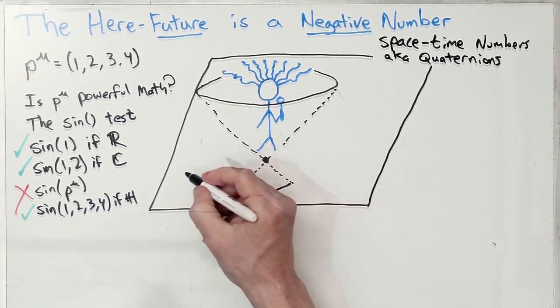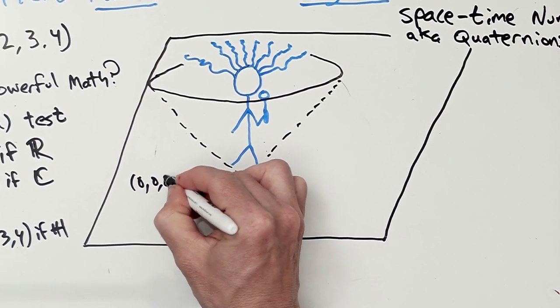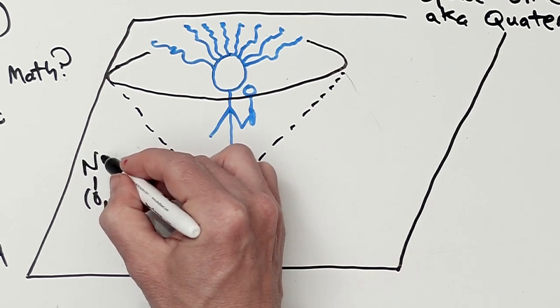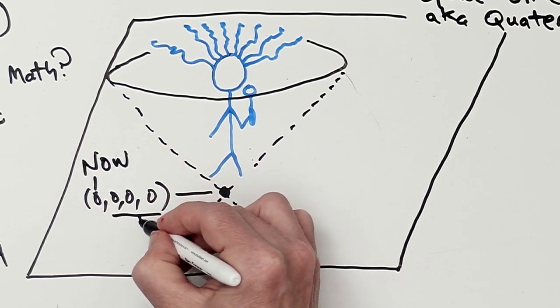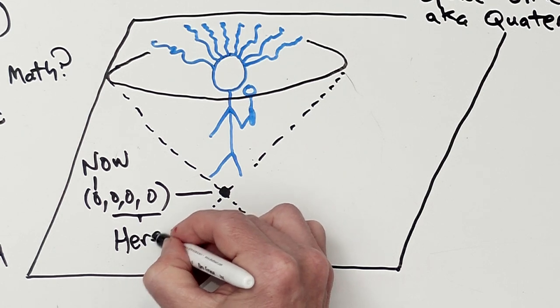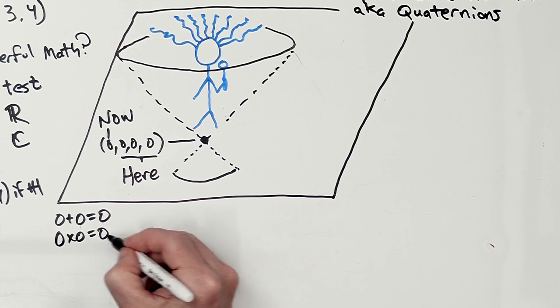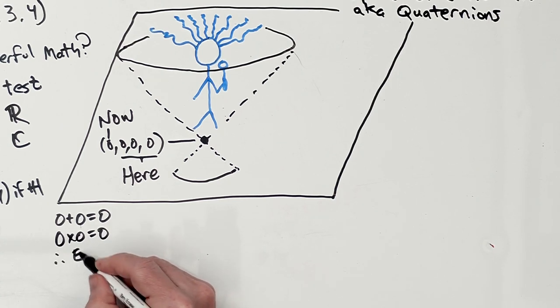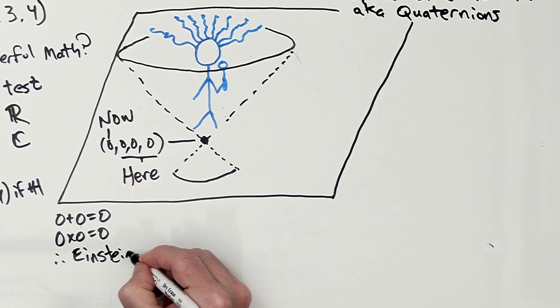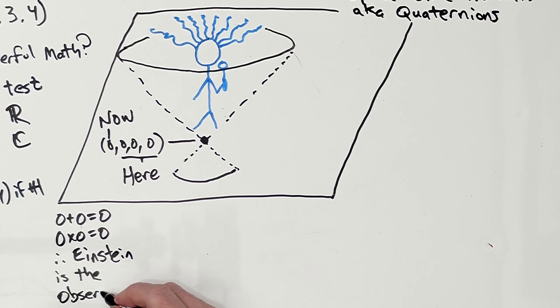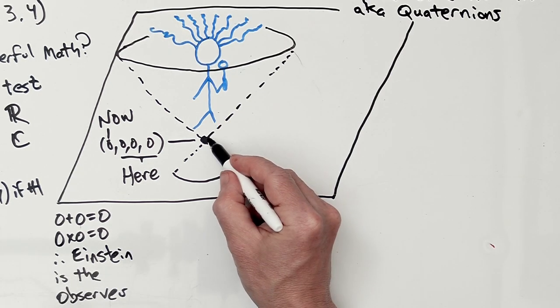And he's right there in the center, which is (0, 0, 0). We call that the origin, but this actually has a physical interpretation. And that is now for the first number. And when those three are 0, that's here. And we note that 0 plus 0 is 0, and 0 times 0 is 0. And I interpret that to mean that Einstein is the observer in this situation.